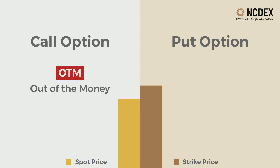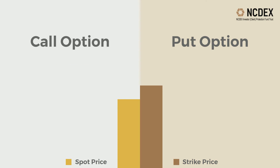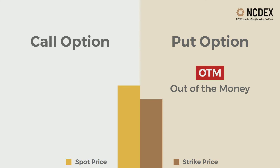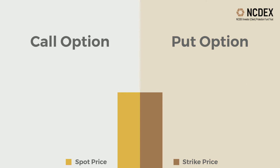OTM — out of the money: a call option is said to be OTM when the spot price is less than the strike price. A put option is said to be OTM when the spot price is more than the strike price. ATM — at the money: call and put options are said to be ATM when the spot price is equal or nearly equal to the strike price.